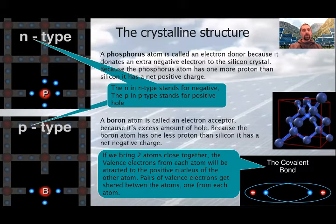In the crystal, the phosphorus atom is called an electron donor, because it donates an extra negative electron to the silicon crystal. The N type, the N stands for negative. Because the phosphorus atom has one more proton than silicon, it has a net positive charge. A boron atom is called an electron acceptor, because it has an excess amount of holes. Here, the P in the P type stands for positive hole. Because the boron atom has one less proton than silicon has, it has a net negative charge.